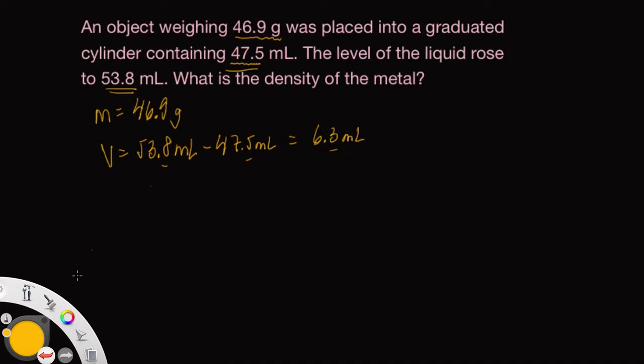All right, now we can utilize the density formula to go ahead and calculate the density of this metal object. So the mass is 46.9 grams.